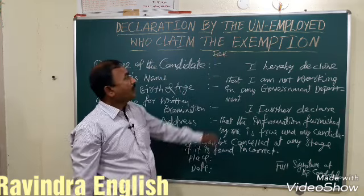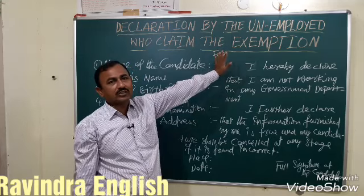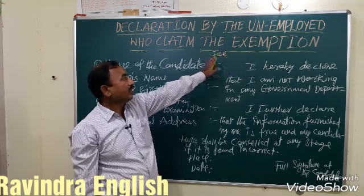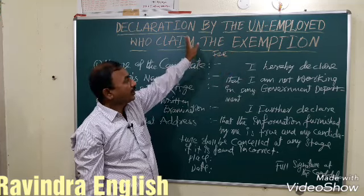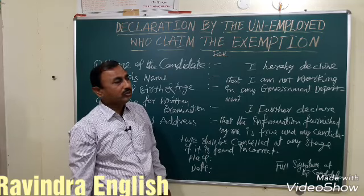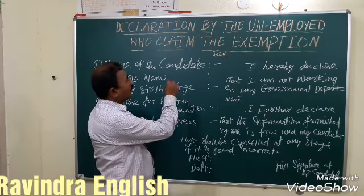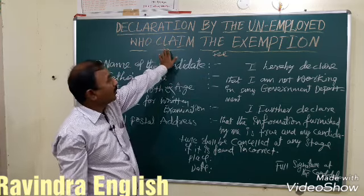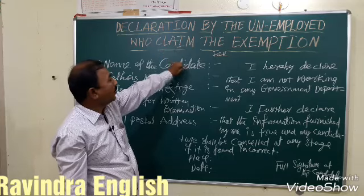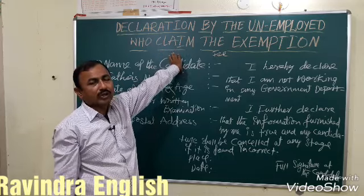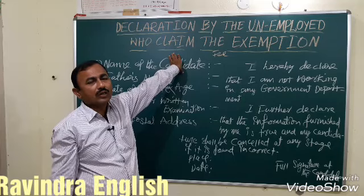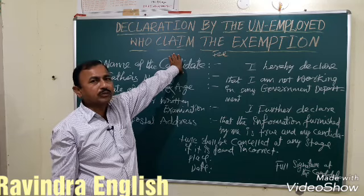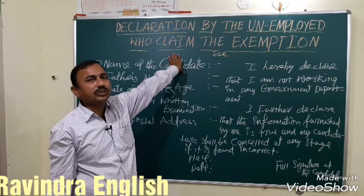I am going to explain about P-exemption as an O.C. candidate. After 44 years of age, P-exemption applies to O.C. candidates. That means I am unemployed — I am not doing a government service or a public service. This declaration is only for O.C. candidates.